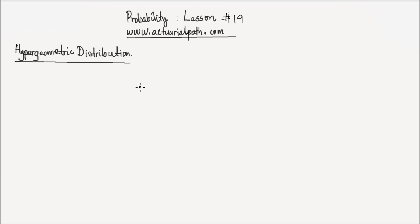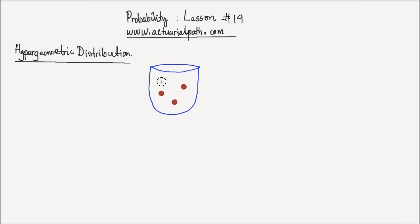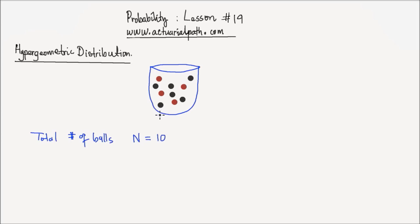I'm going to start with an example. Suppose we have an urn which has four red balls and six black balls. So the total number of balls in this urn is capital N, which is equal to 10 — four plus six.